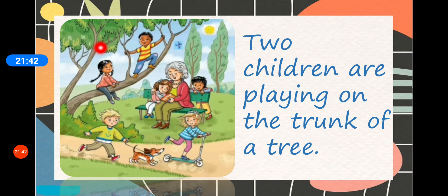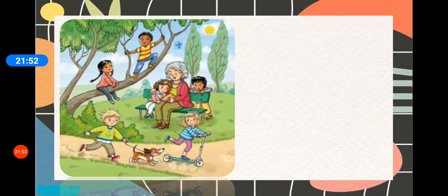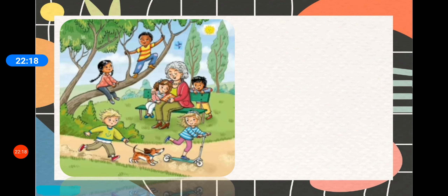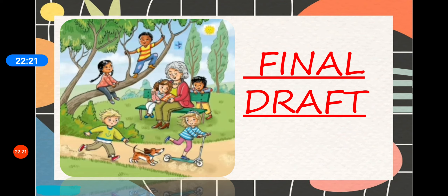You can also write: 'There are green trees in the park' or 'There is a lot of greenery in the park.' Now we have to close our composition with a general and impressive line. We can write: 'Everyone is enjoying in the park' — a sentence that covers everyone in the park. That is how we end our composition. Yes, it was easy! Would you like to have a look at the final draft — how the complete composition and complete paragraph looks?